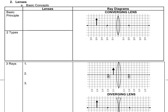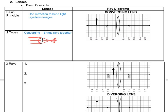Moving on to lenses, which are an application of what we know about light rays. The basic principle is that lenses use refraction to bend light rays and form images. We have two types: a converging lens, also known as a convex lens, which brings light rays together at a focal point. And a diverging lens, also known as a concave lens, which spreads light rays apart. For a diverging lens, we trace the rays back to find the focal point, which is in a different location than for a converging lens.